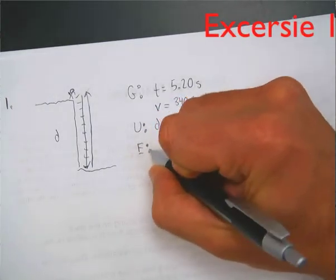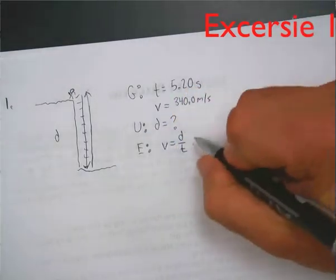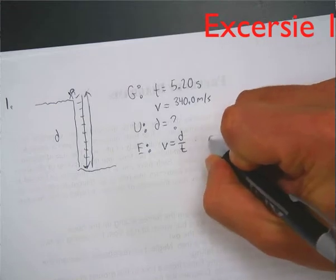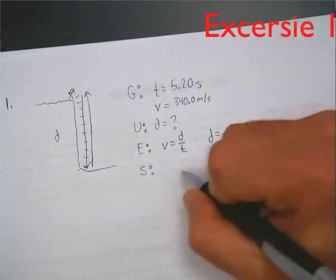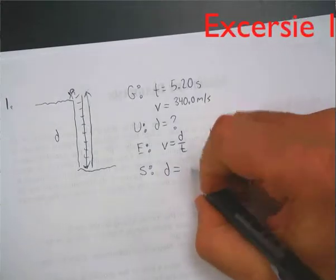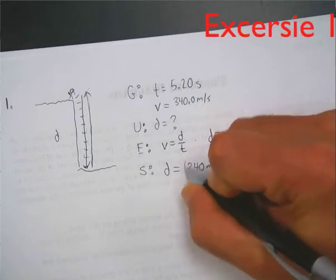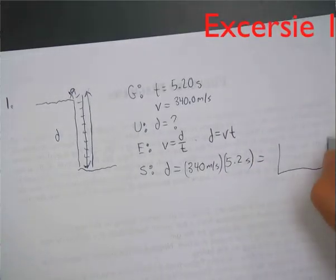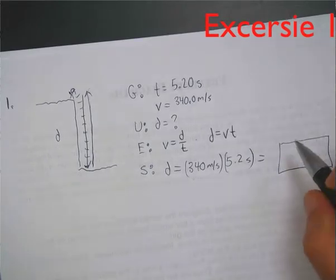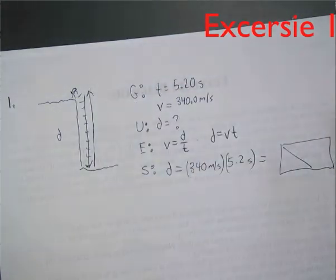Our equation: originally, speed is distance over time. But we're going to cross-multiply and solve for distance, so distance equals V times T. We substitute: D equals 340 meters per second times 5.2 seconds to get our answer. But that answer is twice as much as we want, because the sound traveled down and back up. So we divide by 2, and that will be our final answer.